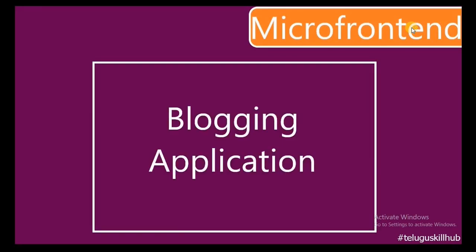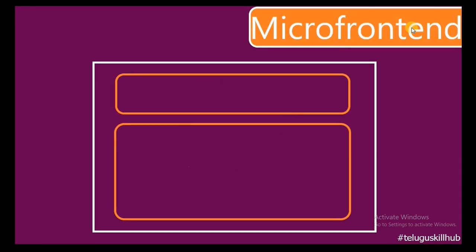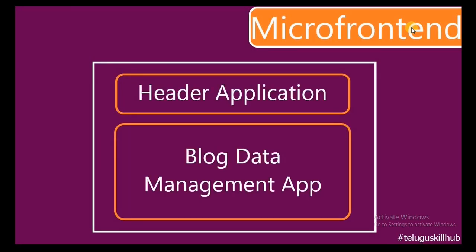As a simple example, we have created a small blogging application project. We create two different projects and integrate them into one. If we develop a blogging application, we develop two different applications: first, a header application, and then a blogging data management application. We integrate the header part into one service, then render the blogging data from another project.